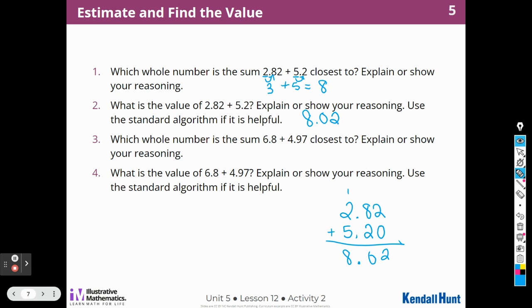So, we'll do the same thing for number 3. Which whole number is the sum closest to? So, I'm going to underline the 6. That's my whole number. Look at that 8. That 8 is going to make this closer to number 7. Then I'm going to underline the 4. Look at that 9. That 9 is going to mean it's closer to 5. And 7 plus 5 is 12. 7, 8, 9, 10, 11, 12. Yes. So, my answer should be close to 12.